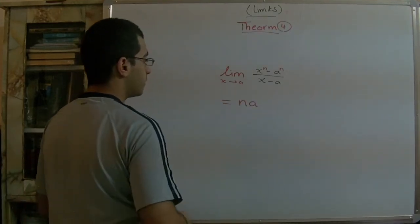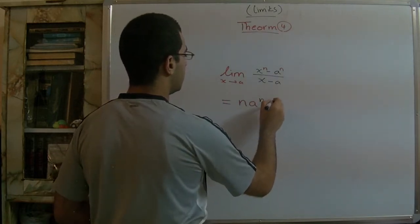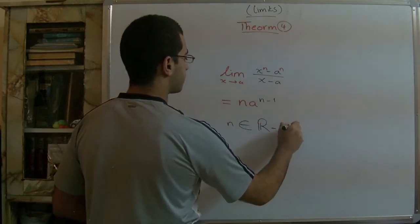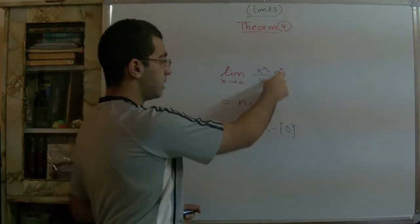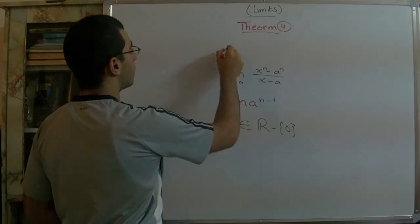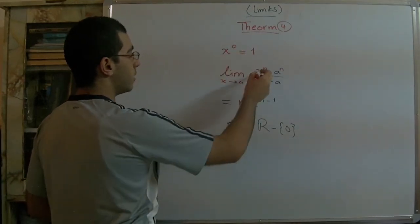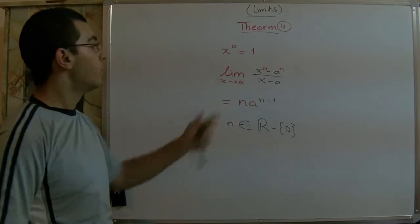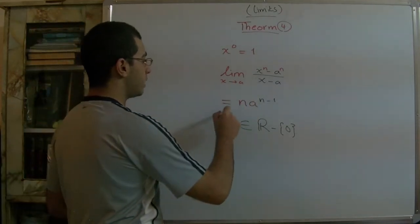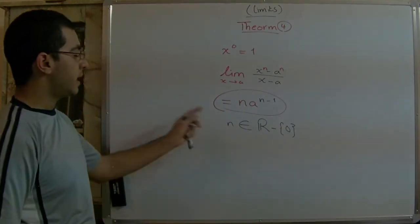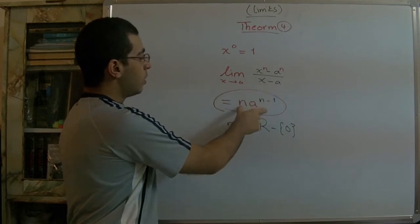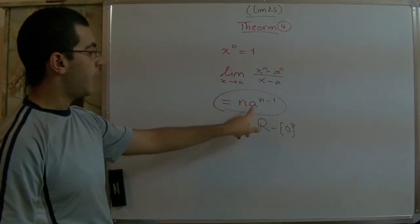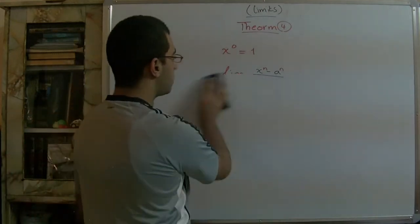Then the result is n·a^(n-1) as n belongs to R minus {0}. So n doesn't equal 0 because if n equals 0, any number to the power 0 equals 1, so 1 - 1 equals 0 and the rule wouldn't be efficient. But our rule today is that one. Now if we have this formula we can get the answer through this method: n·a^(n-1). We will have an example to illustrate this.